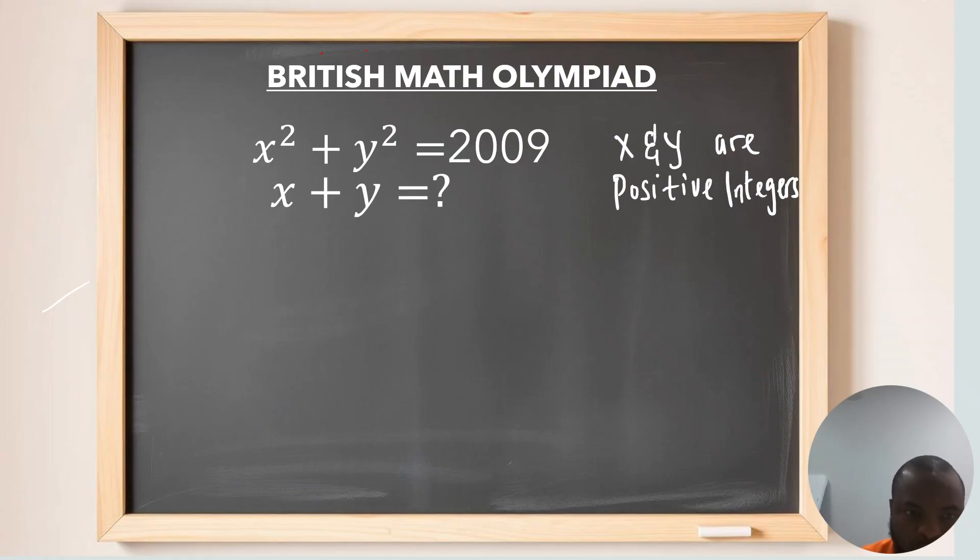The first thing we're going to be doing here is, let's look for the factors of 2009. Here we have 2009. Now, the first factor here is 7. 7 in 2009, we're going to have 287.